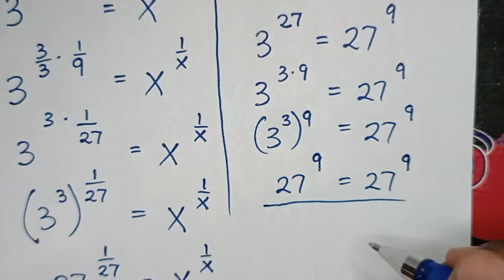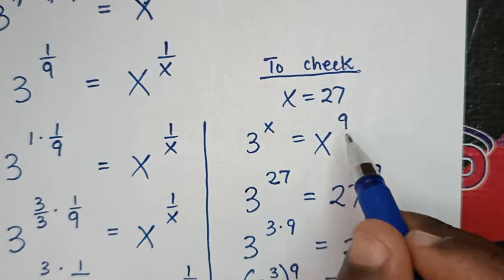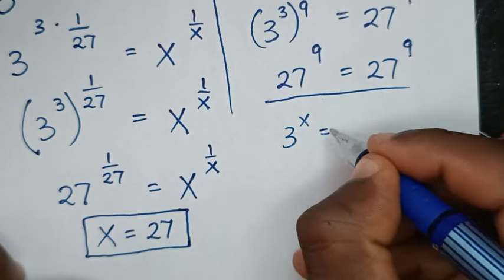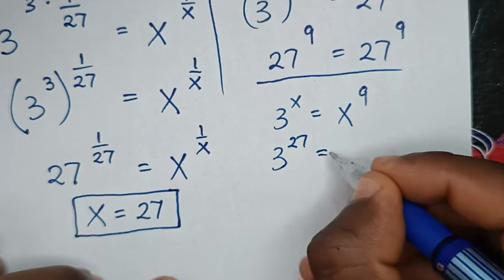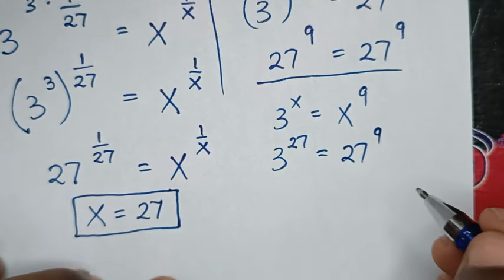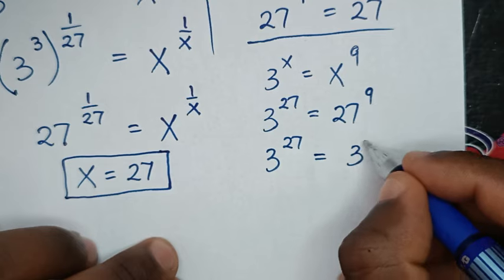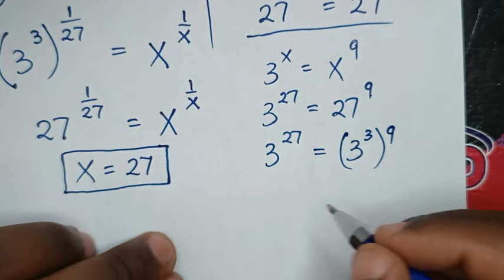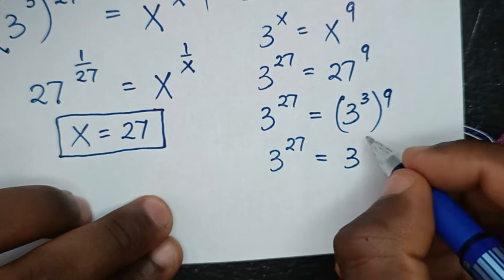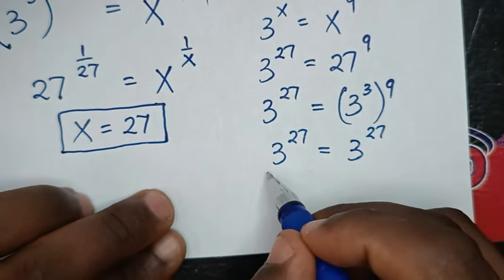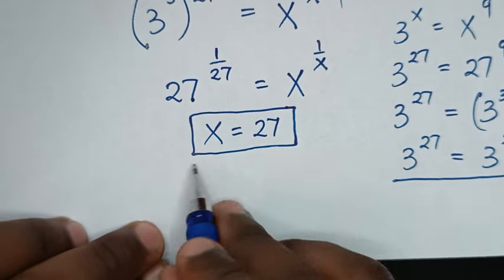Left side and right side are equal. Or to check in another way: from our problem, 3 power of x is equal to x power of 9, we substitute x which is 27. So 3 power of 27 is equal to 27 power of 9. Then 27 is the same as 3 power of 3, so bracket this with power of 9, giving 3 power of 9, and 3 times 9 is 27. So 3 power of 27 is equal to 3 power of 27 — left side and right side are equal. This confirms the value of x is equal to 27.